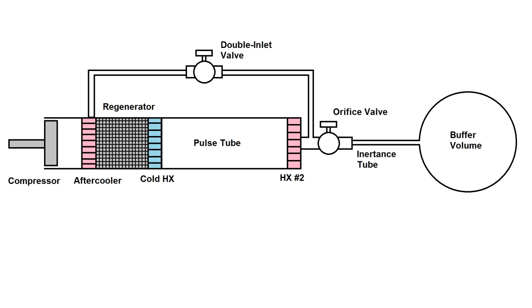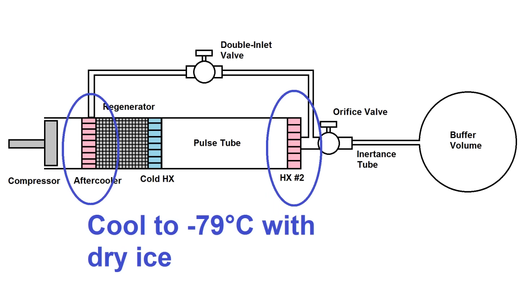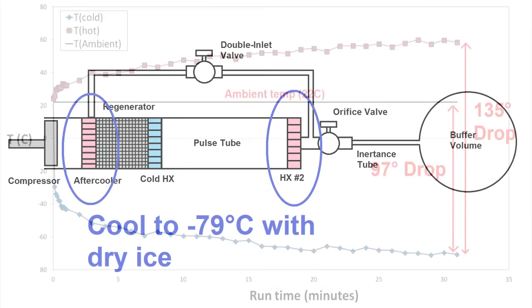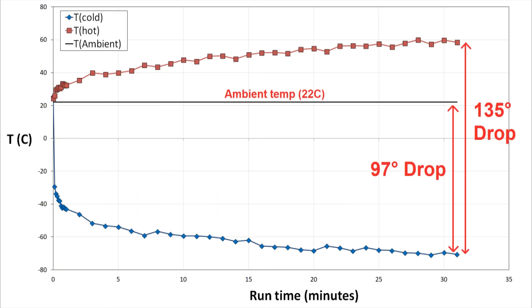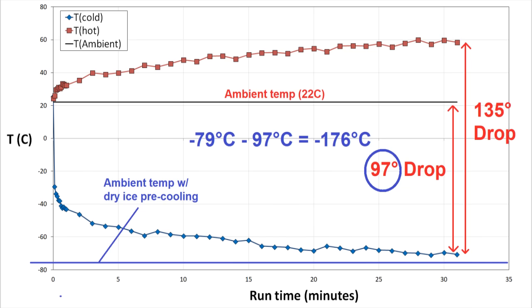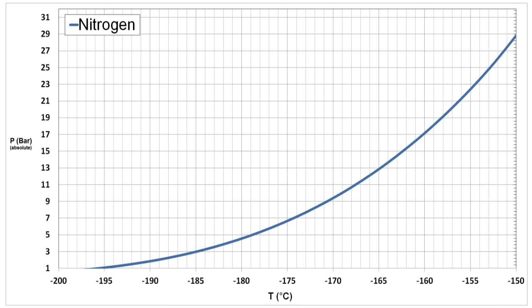I was curious to see if I could get closer to liquid nitrogen temperatures with my Pulse Tube Cryo Cooler by pre-cooling with dry ice, because dry ice is minus 79°C and I can produce a temperature drop below ambient of almost 100°C. So if I could start at minus 79 and drop 100 degrees, that would put me at a low enough temperature that I could liquefy nitrogen if I increase the pressure to about 6 atmospheres.